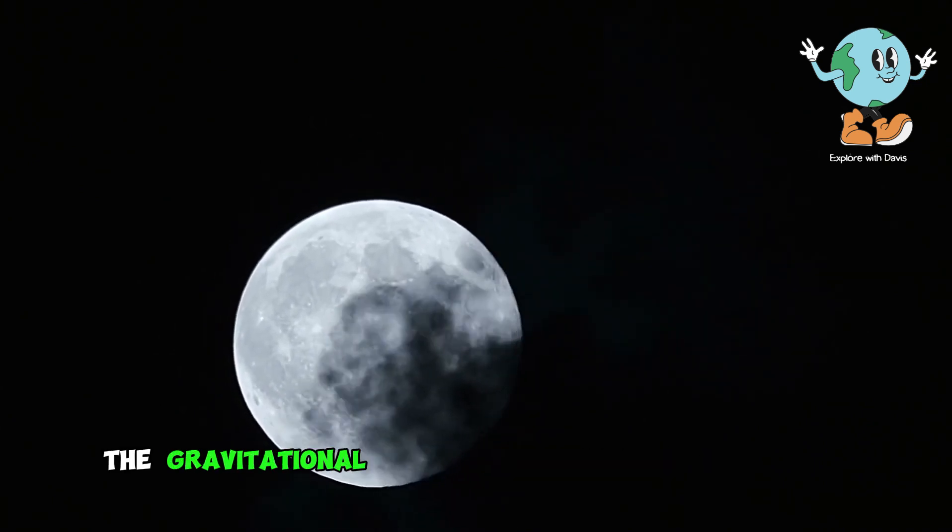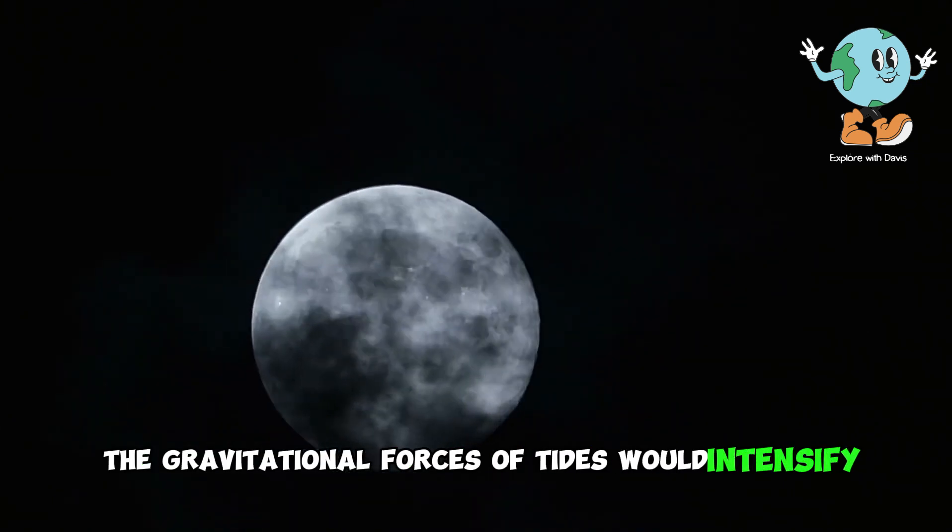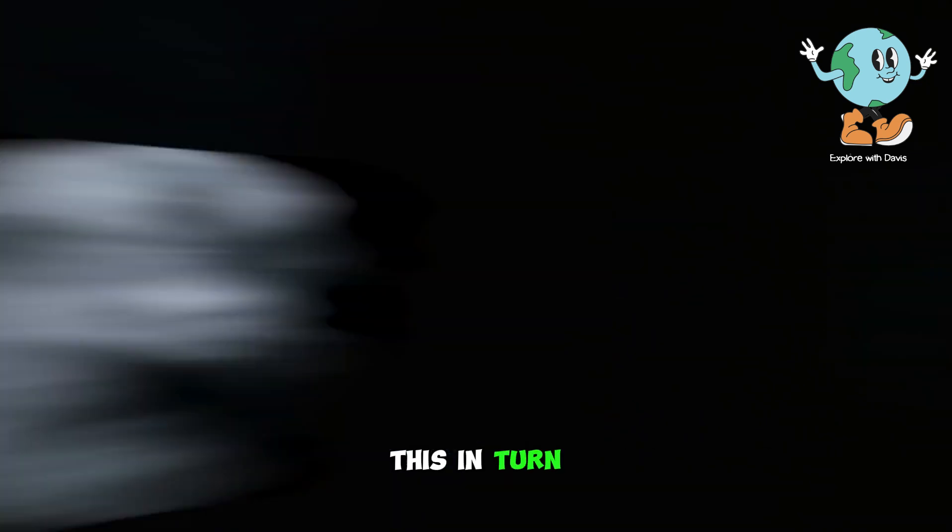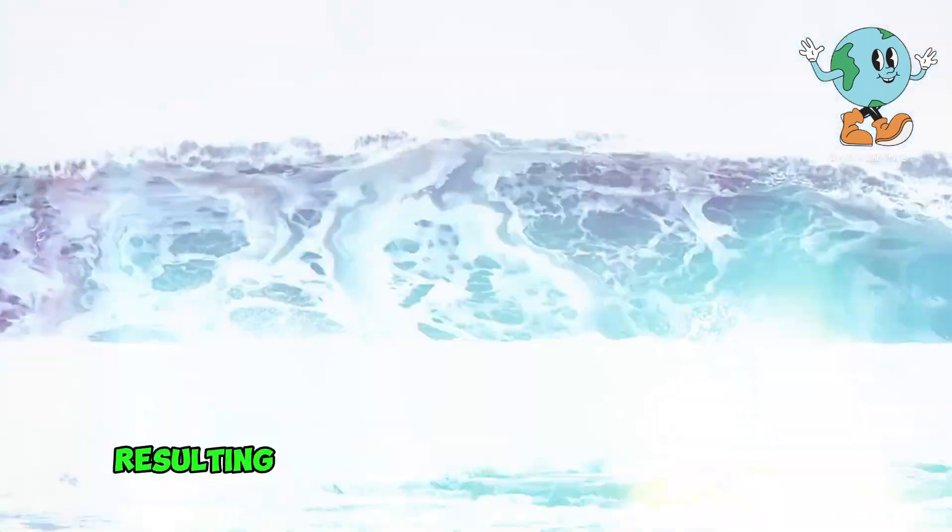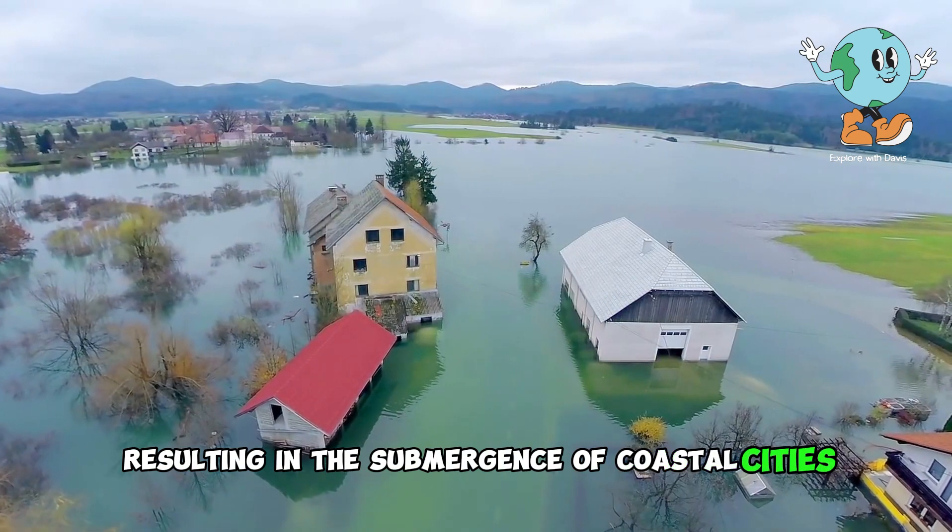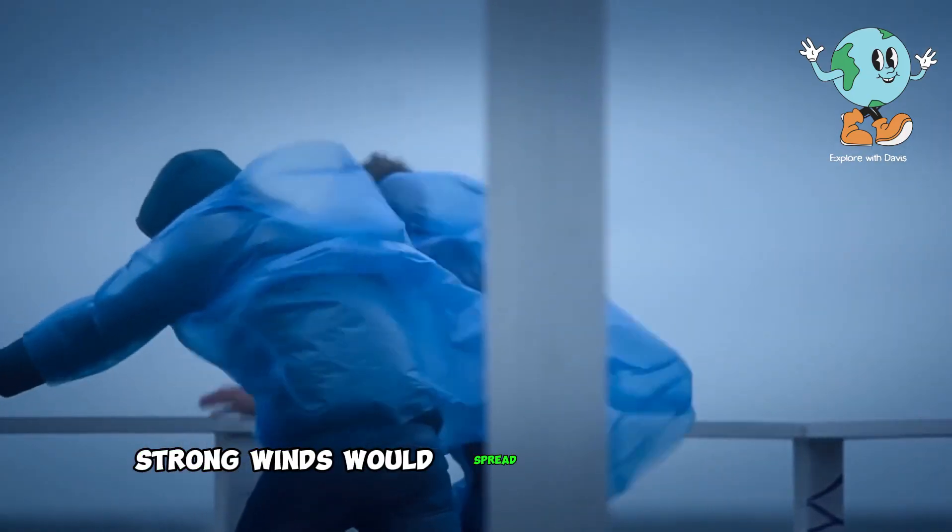As the moon gets closer to Earth, the gravitational forces of tides would intensify exponentially. This would lead to severe flooding and disruptions in water movements, resulting in the submergence of coastal cities. Additionally, strong winds would spread across Earth.